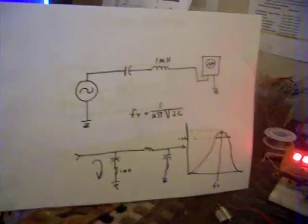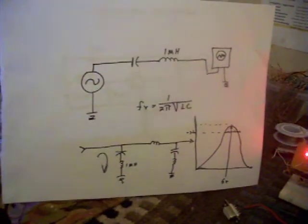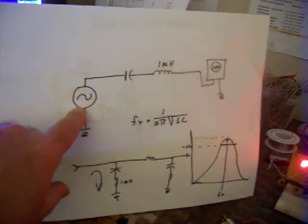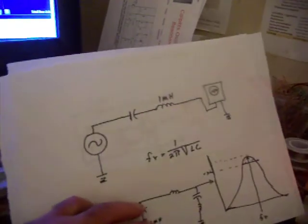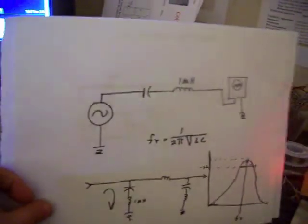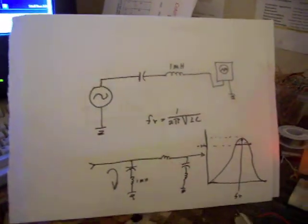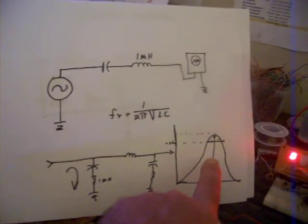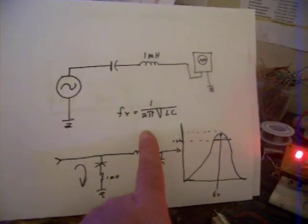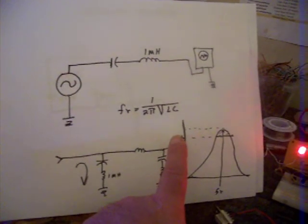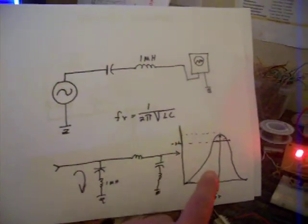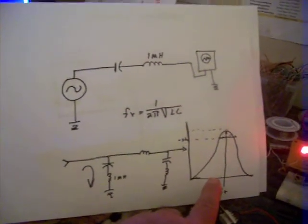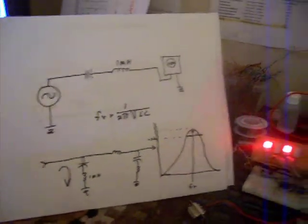Then I decided to make a series resonant circuit like here: signal generator, capacitor, the coil, and the scope to see what would happen. What should happen is that at peak resonance, determined by 1 over 2 pi times the square root of inductance and capacitance, it should peak out, and the side bands should be lower. So let's see what it does.